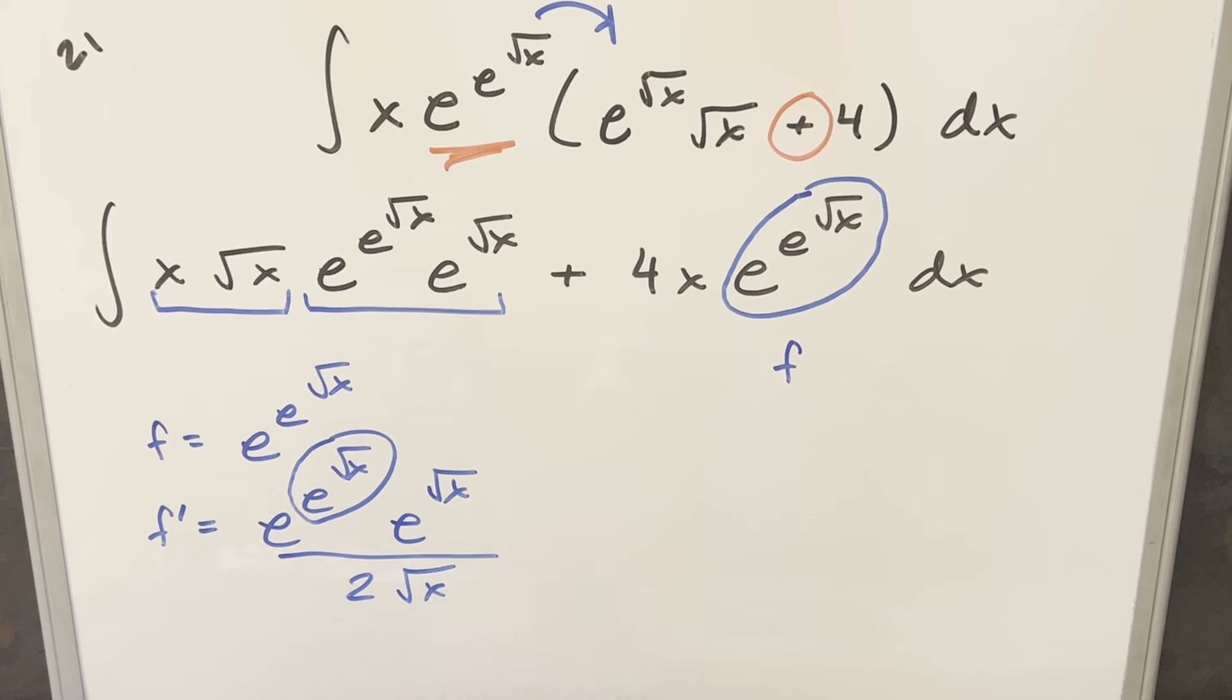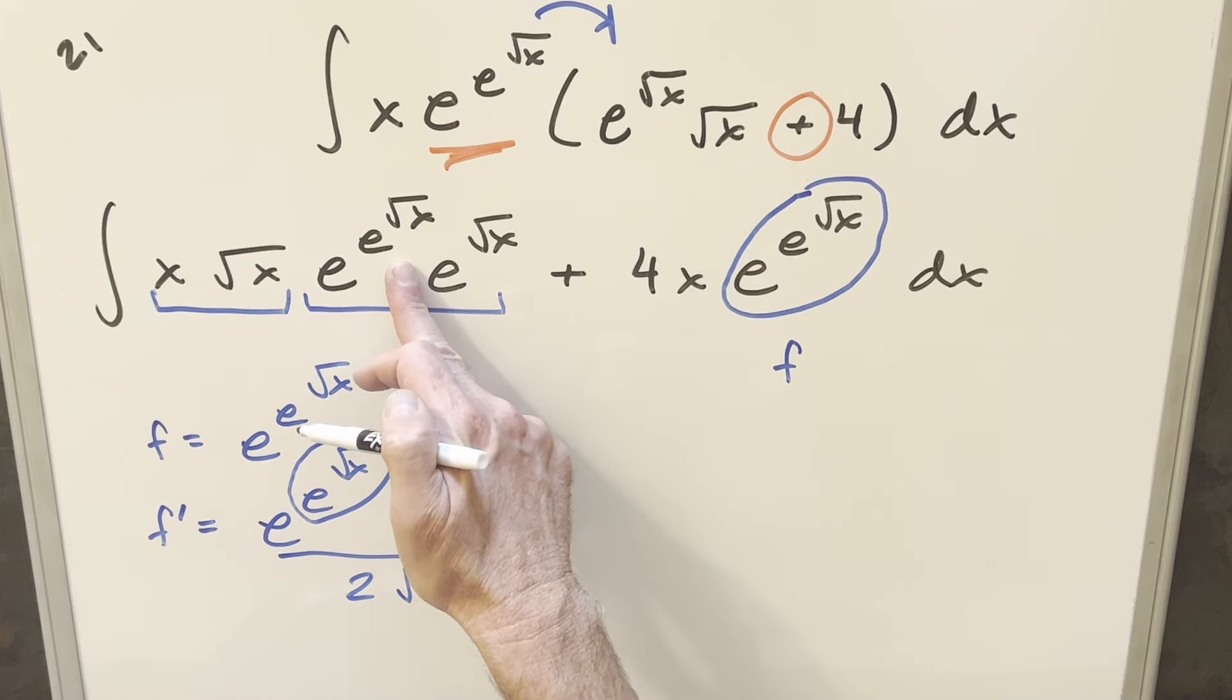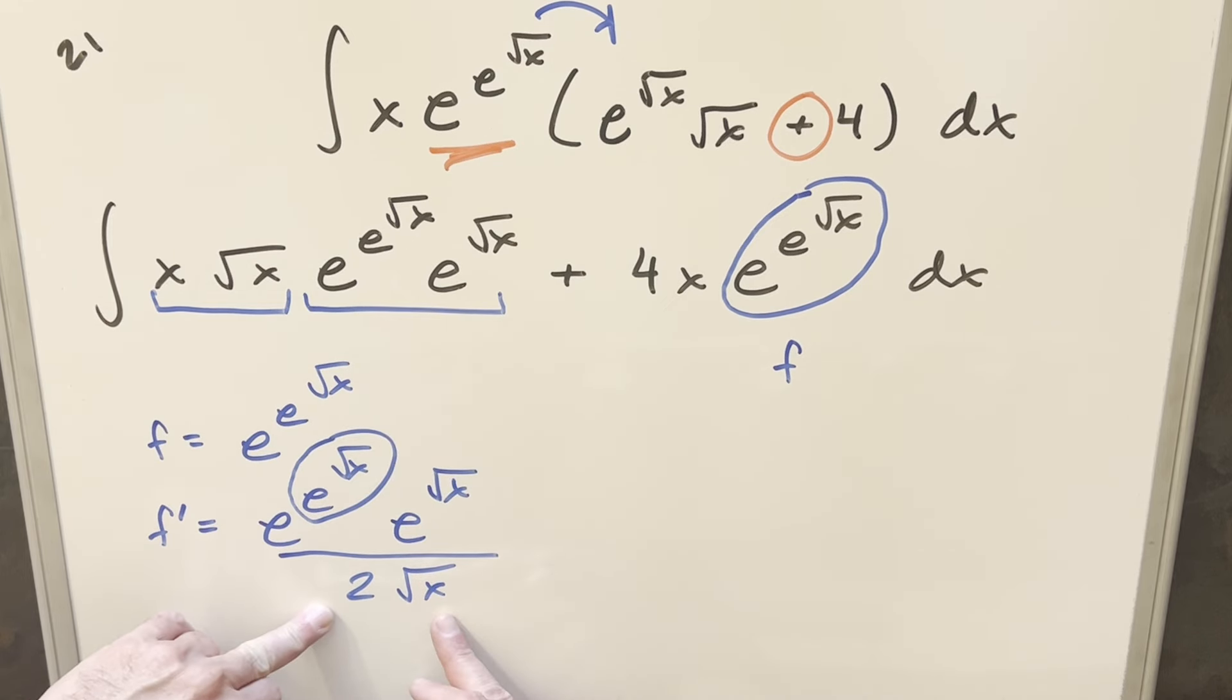And the interesting thing is this numerator right here—this is exactly what we have right here on the left side. And what I'm going to do is let's kind of force this to happen because if this is going to work we're going to need something in the denominator.